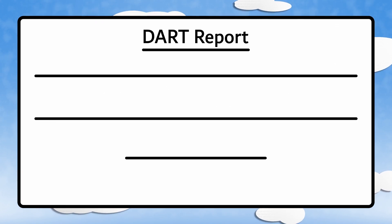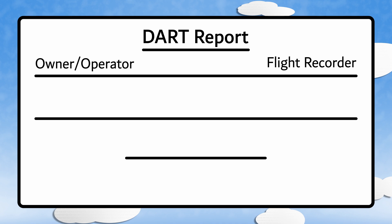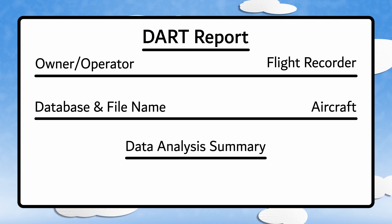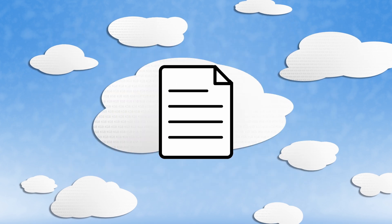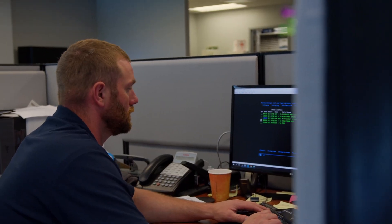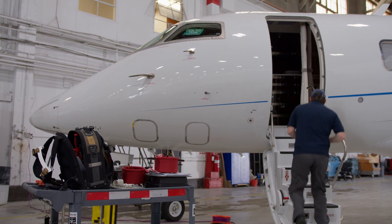This report is generated by KGB and sent to Duncan Aviation, including information about the owner or operator of the aircraft, the flight recorder, the database and file name, the aircraft, and a data analysis summary that describes if analyzed parameters were between expected values and if all systems were working as they were supposed to. Also, a summary report is sent with all the processed data recovered from the FDR and CVR of the aircraft. The report provides specific failures and potential suggestions on the repairs required.